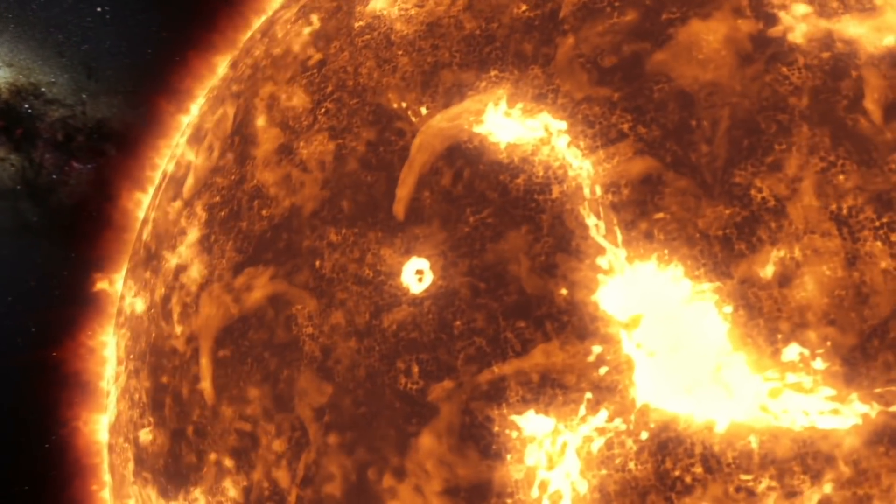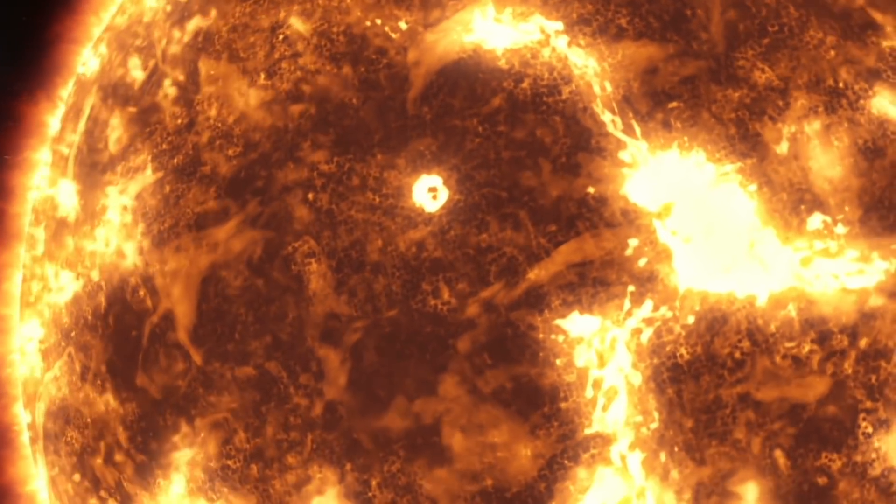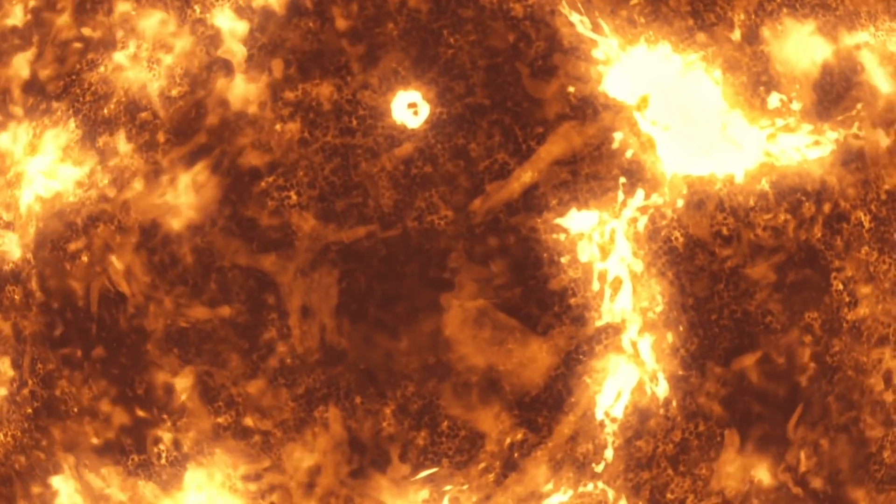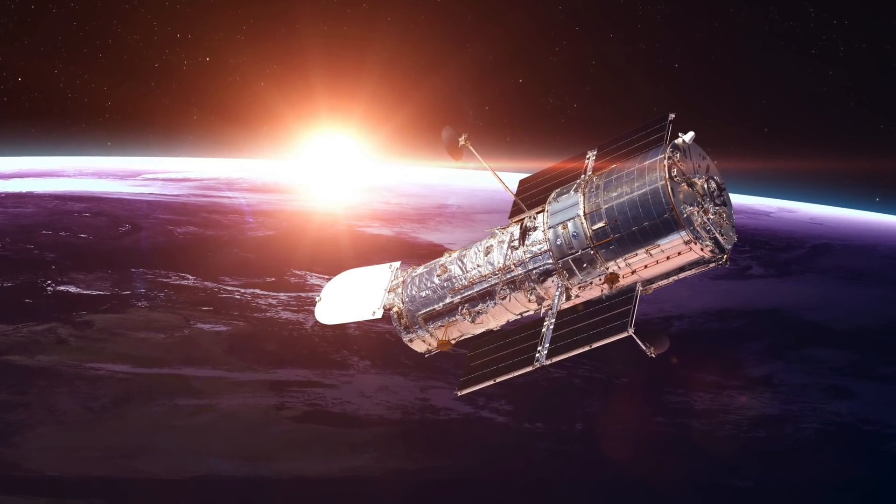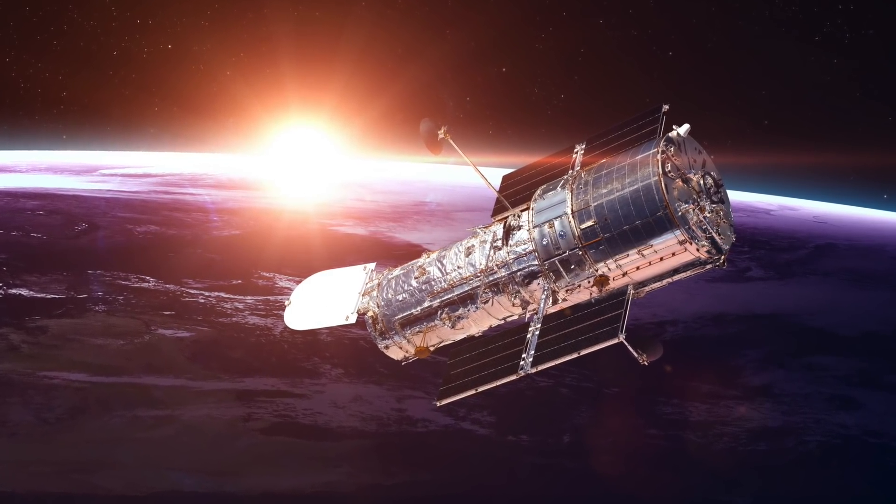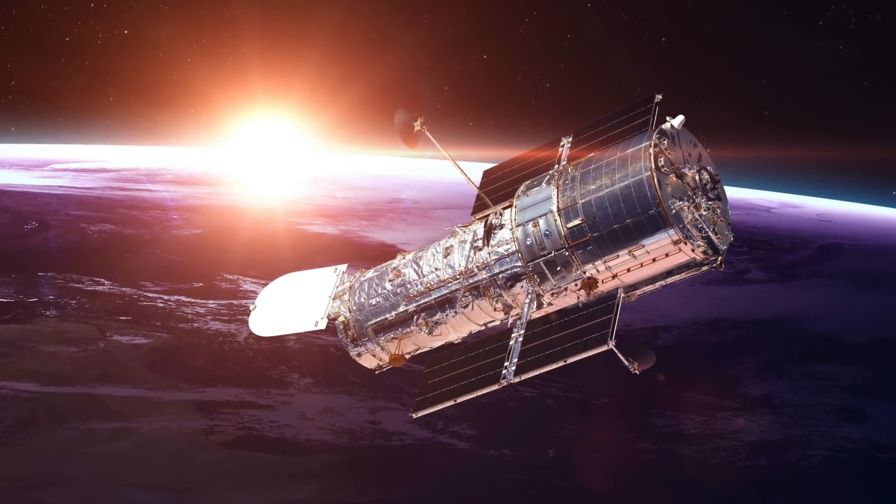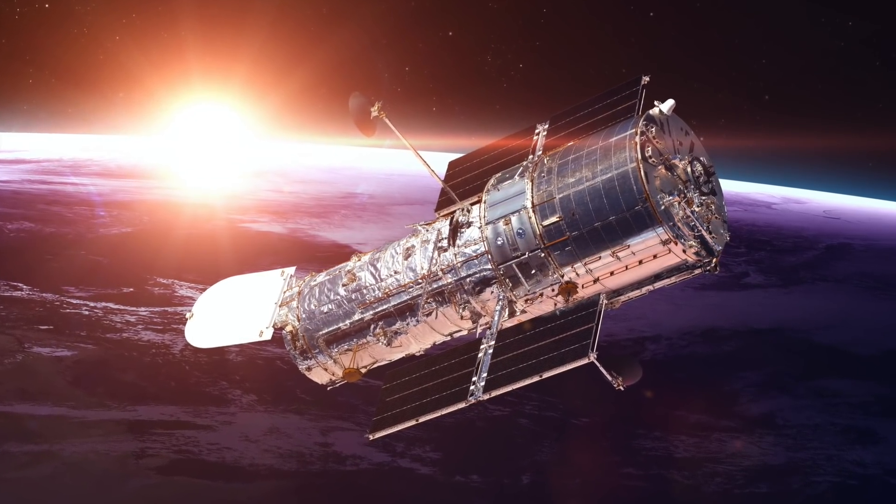Long before our sun and the Earth even existed, a planet the size of Jupiter formed around a star that had similarities to our sun. Today, 13 billion years later, NASA's Hubble Space Telescope has accurately measured the mass of this most distant and oldest known planet.